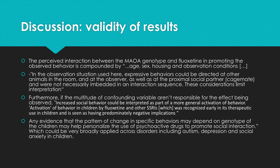Furthermore, if the multitude of confounding variables aren't responsible for the observed effect, increased social behavior could be interpreted as part of a more general behavioral activation by fluoxetine and other SSRIs — recognized early in therapeutic use in children and seen as having predominantly negative implications. Any evidence that the pattern of change in specific behaviors may depend on children's genotype could help personalize the use of psychoactive drugs to promote social interaction, broadly applicable across disorders including autism, depression, and social anxiety in children.